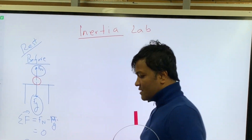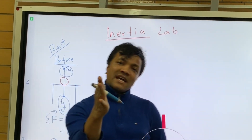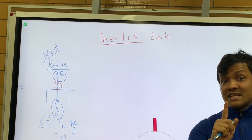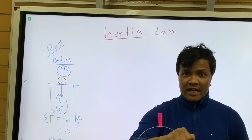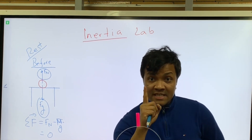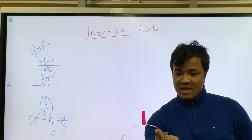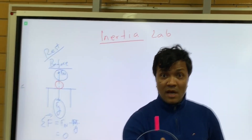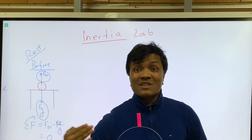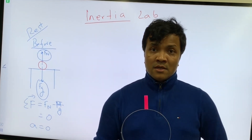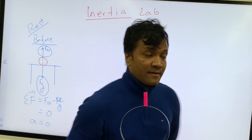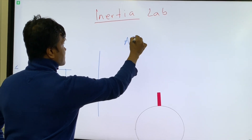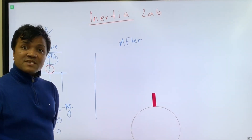Now we're going to make things even more interesting. We're going to examine Newton's second part of the first law: objects in motion like to stay in motion in a straight line. We're going to investigate whether that's true by removing the ring. If we can remove the ring abruptly, then the object will start falling.